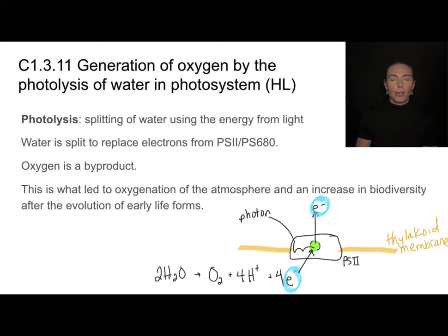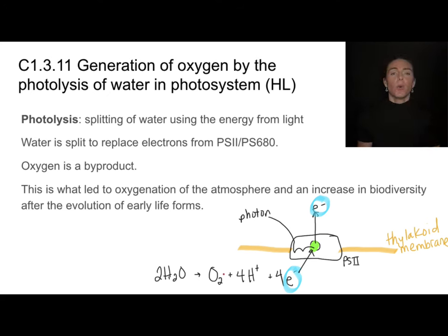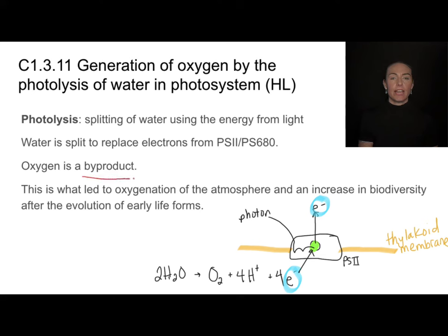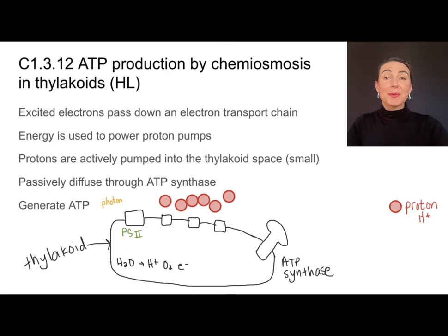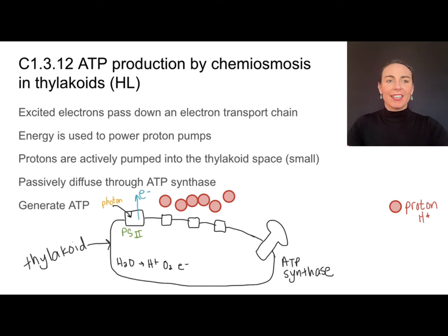Why does photosynthesis need water? The whole reason is that we need those electrons, and we're also going to use those protons shortly. What plants don't need is the oxygen, so oxygen is given off as a byproduct — it's not necessary. It's really about the replacement electron. So photosystem II absorbs a photon of light, that excites an electron from the chlorophyll molecules in the reaction center, and we need to replace it. We use electrons produced from the photolysis reaction to replace that excited electron from photosystem II.